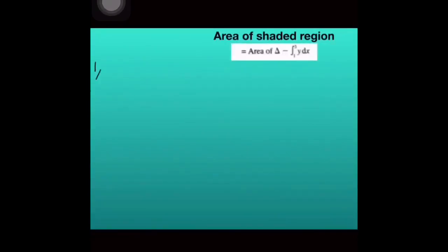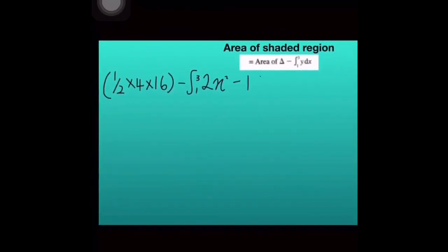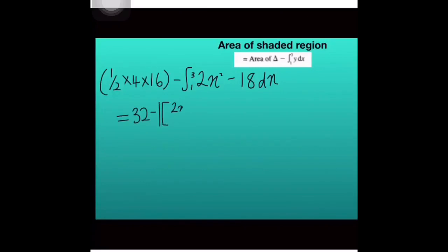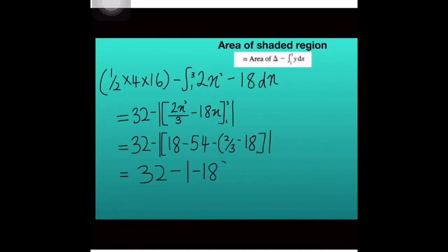Area of the shaded, triangle tolak dengan kita integrate Y dX. Masukkan je nilai. Kita integrate dulu 2X square tu jadi 2X cube per 3, integrate 18 dapat negative 18X. Lepas dah integrate kita masukkan nilai 3 dengan 1. Masukkan nilai 3 dahulu tolak dengan masukkan nilai 1, dapat 18 tolak 54 tolak 2 per 3 tolak 18. 32 tolak modulus negative 182 per 3. Kita tahu area memang tak boleh negative, kita kena positifkan dia. 32 tolak 182 per 3 dapat 13 1 per 3 unit square. Senang je kan?